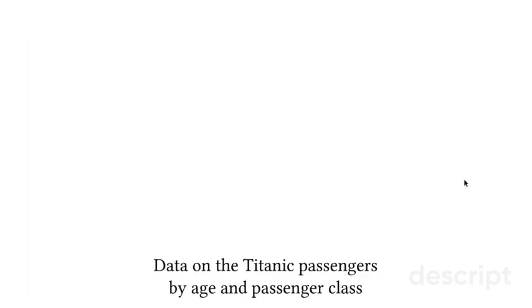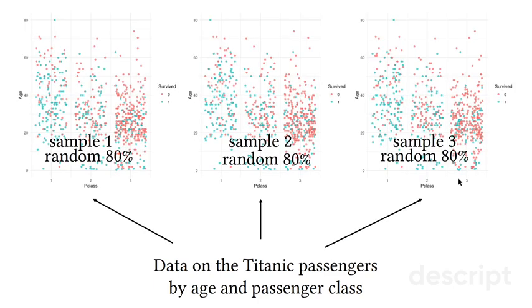If we take data on the Titanic passengers and we organize the passengers by their age and passenger class, and we also know whether they survived the crash or not, we can take different samples from that data. For example, we can take random 80% and organize it as a sample number one, random 80% as a sample two, and another random 80% as sample three.